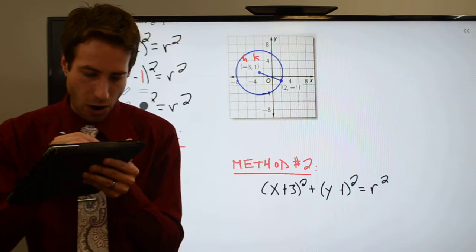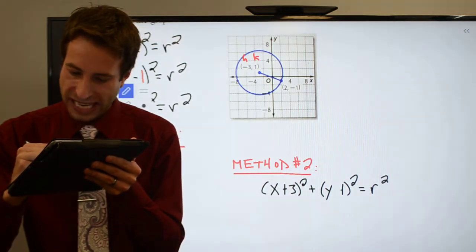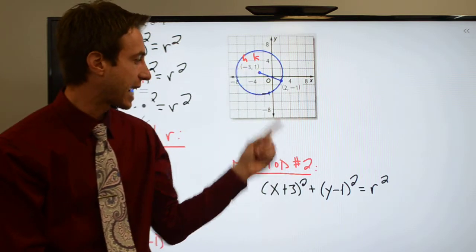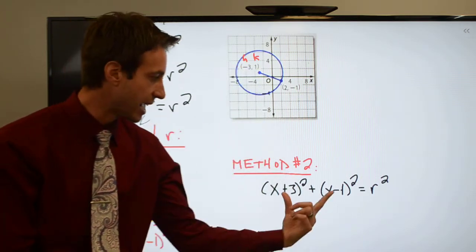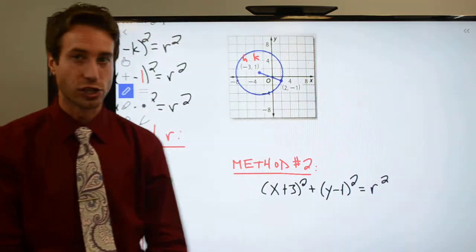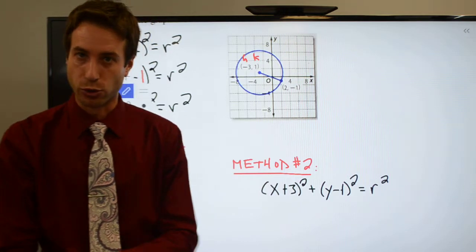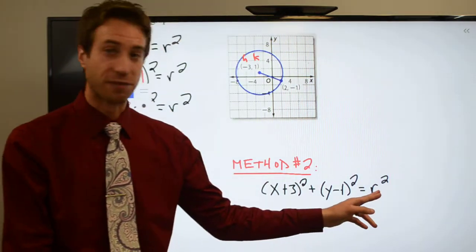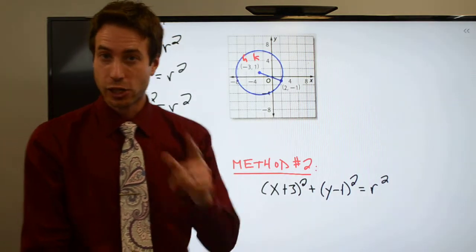I have x plus 3 squared plus y minus 1 squared is equal to r squared, right? That's what I've got so far just from plugging in, right? All I had to do was just plug in the value of h and k into the formula right off that formula sheet and I got this far, right? But what I don't know is r squared. So method number 2.